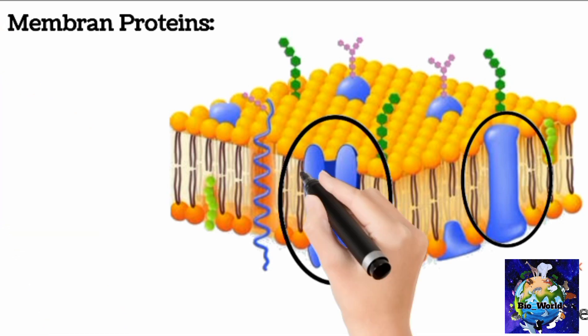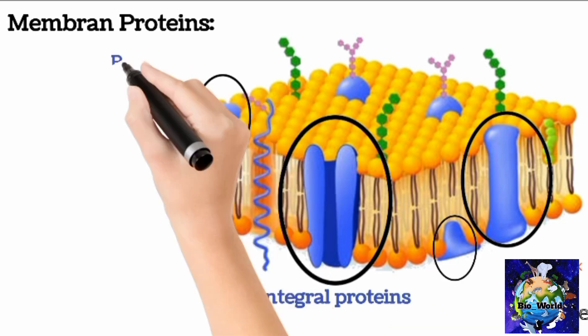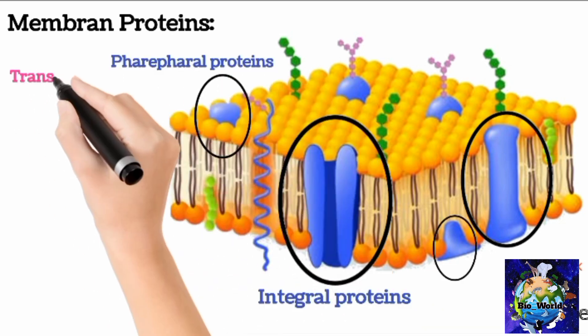Those proteins that are completely embedded in plasma membrane are called integral proteins, whereas those that are partially penetrated are known as peripheral proteins. These proteins basically work as transporters for cell content to transport in and outside the cell.